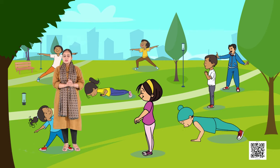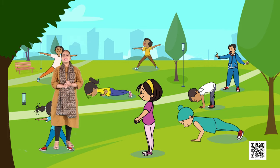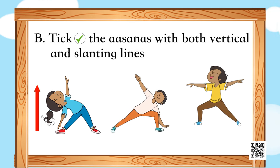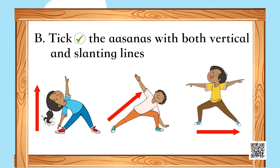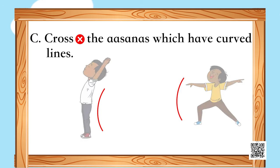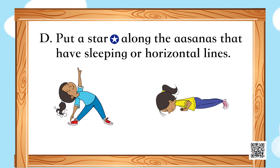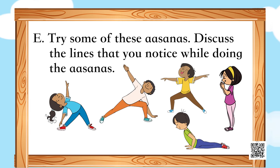They are performing yogasana, and we also need to do some exercise! I have a few questions for you. First, circle the asana with standing or vertical lines. Second, take the asana with both vertical and slanting lines. Third, cross the asana which has curved lines. Fourth, put a star alongside asanas that have a sleeping or horizontal line. Fifth, you also need to do some of these asanas!